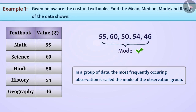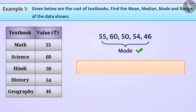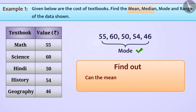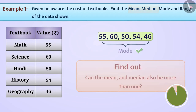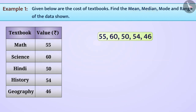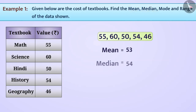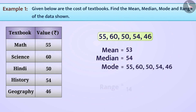This brings us to the conclusion that a data set can contain more than one mode. In this way, we have found the mean, median, mode, and range for the group of data shown.